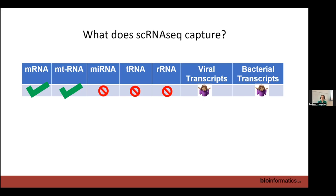For non-model organisms, I recommend using STARsolo instead of CellRanger. STARsolo allows you to tune all the parameters used in mapping, which can greatly improve sensitivity. CellRanger is essentially a black box — you put in your input and get your output, and you can't really change anything about it in practice.